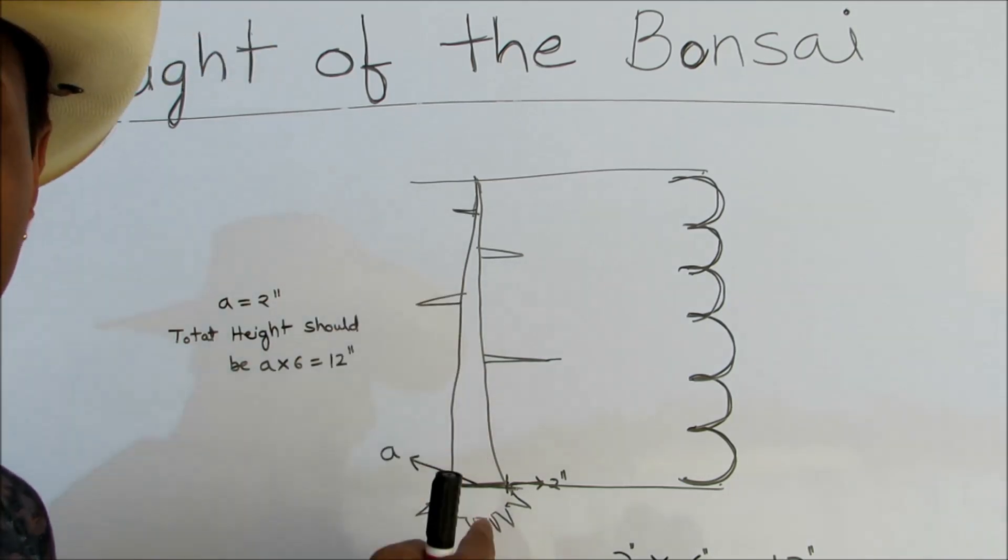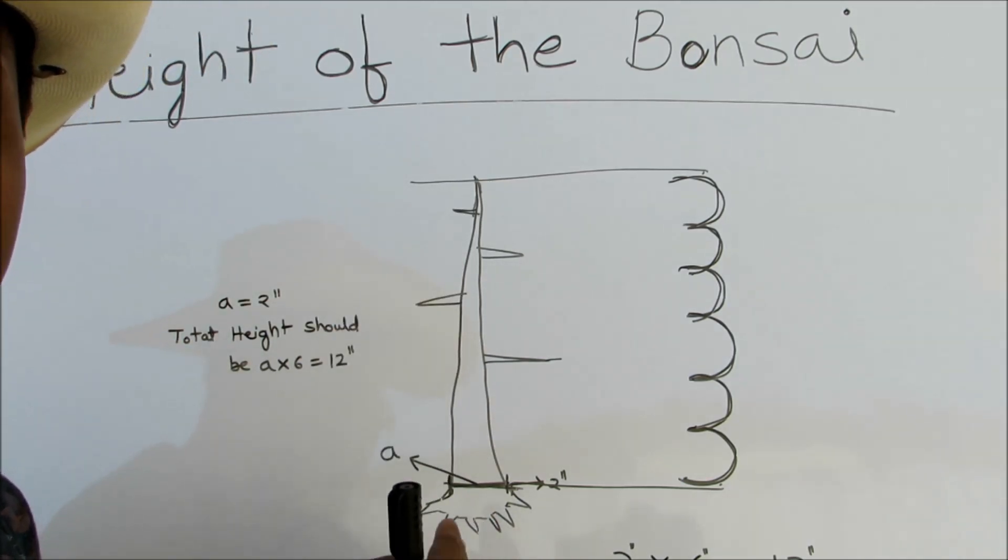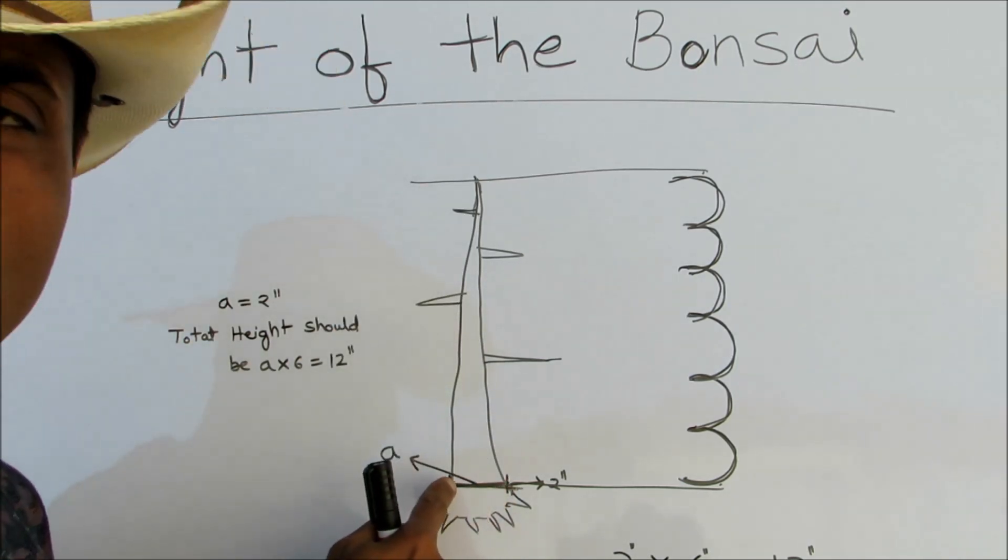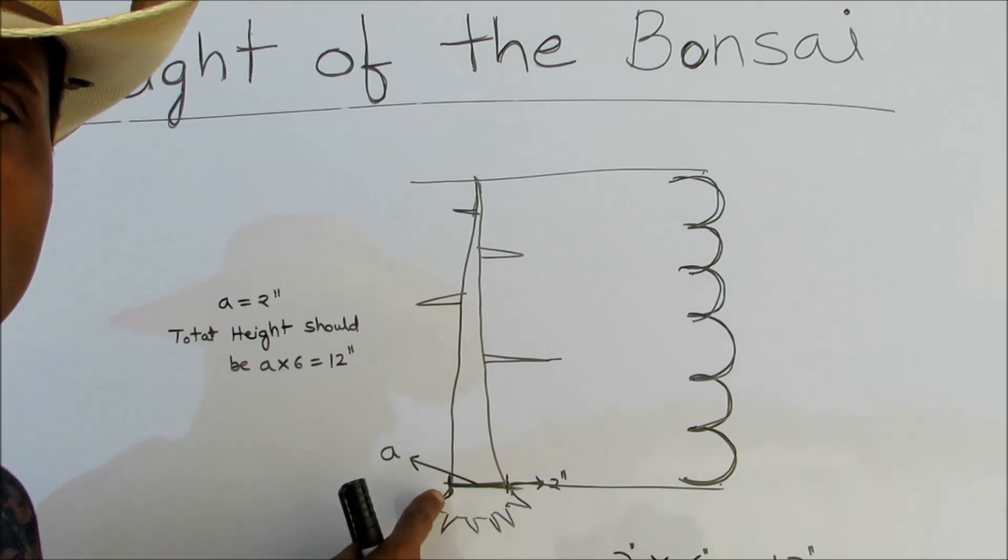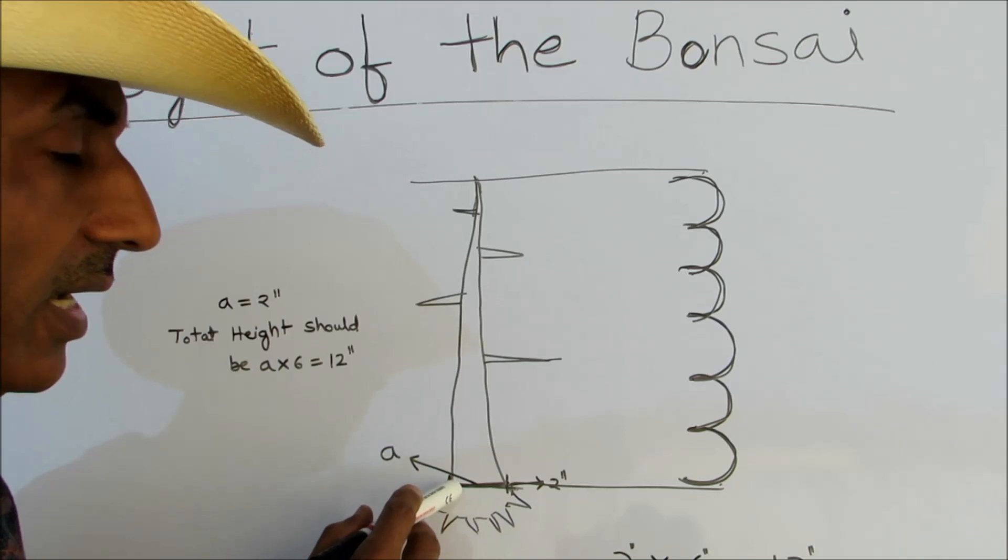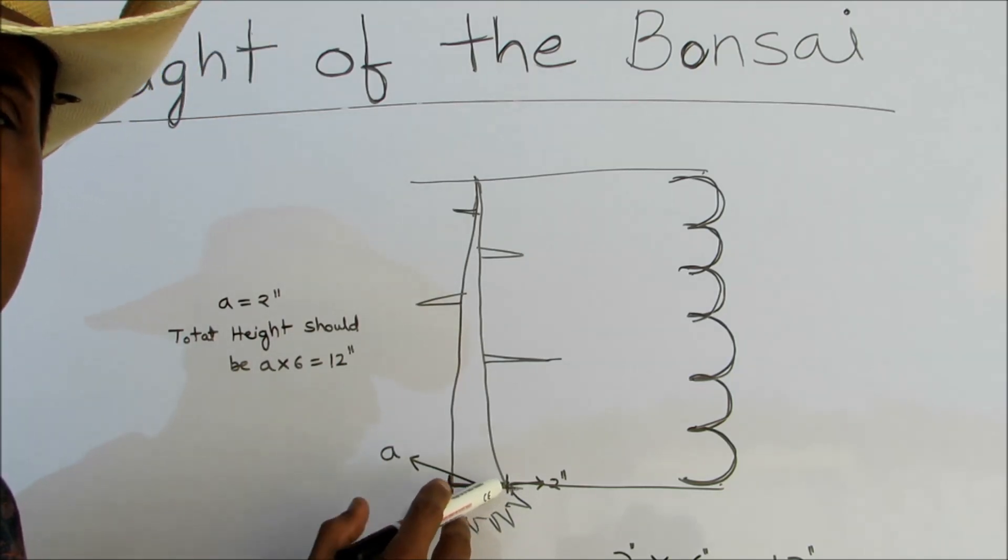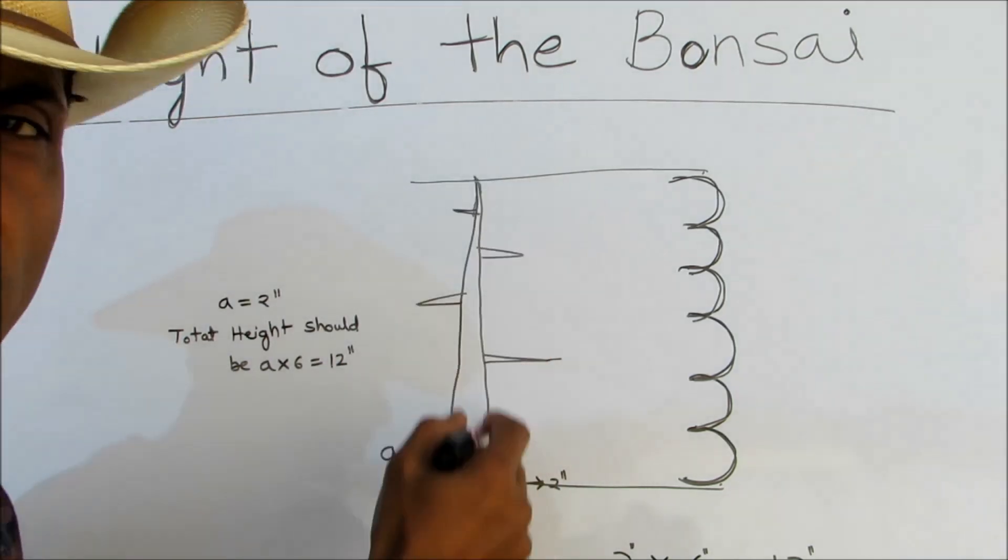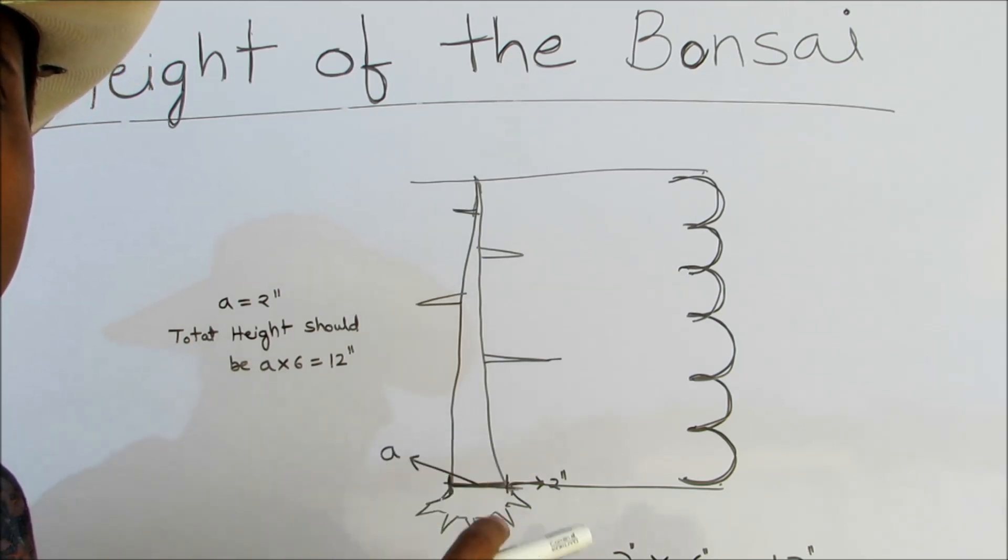Friends, the height of the bonsai depends on the diameter of the trunk at the base. If the diameter is 2 inches, then the ideal height should be multiplied by 6.